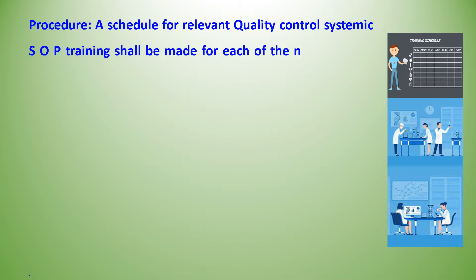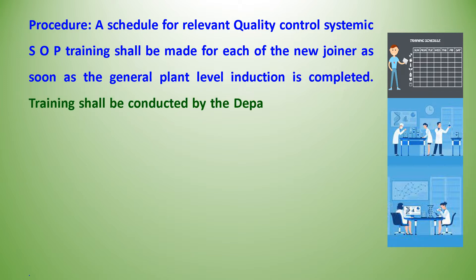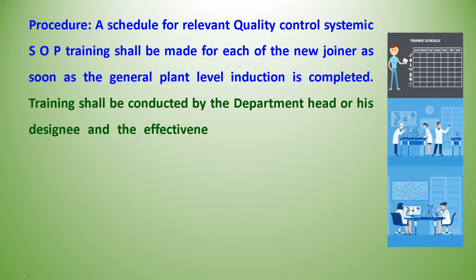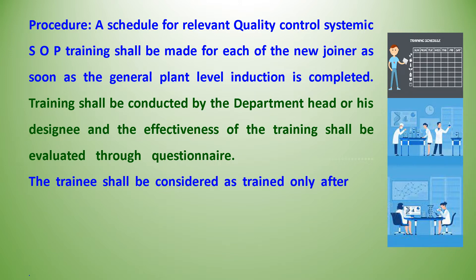A training schedule shall be made for each new joiner as soon as the general plant-level induction is completed. Training shall be conducted by the department head or his designee, and the effectiveness of the training shall be evaluated through a questionnaire. The trainee shall be considered as trained only after qualifying as per the questionnaire. Details of the above training shall be recorded in the individual training card.